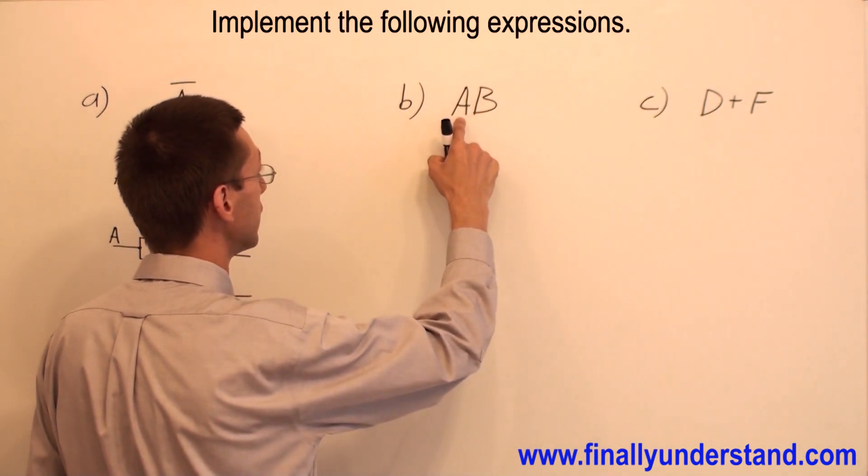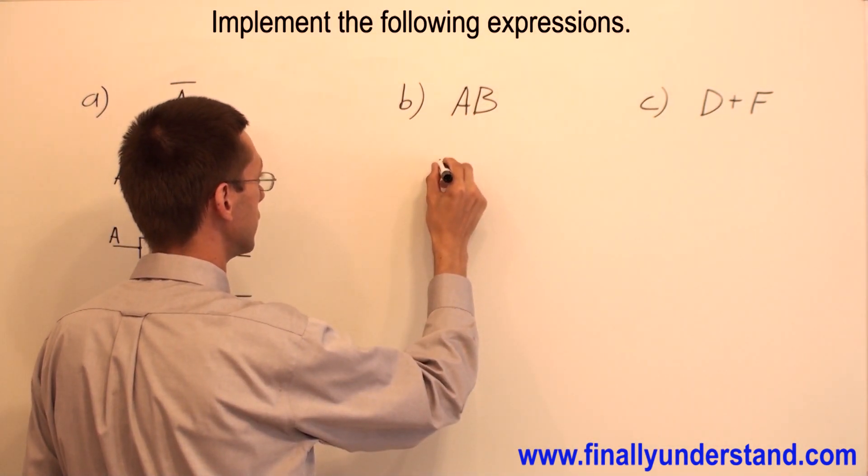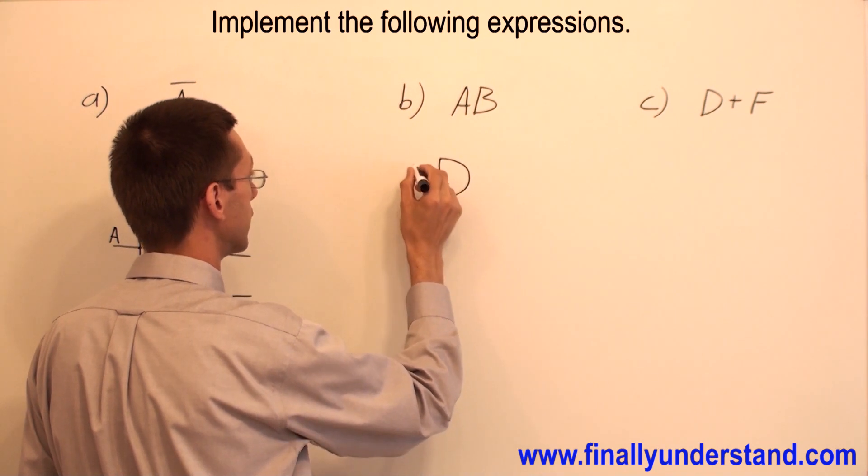Now we have A and B. This is simply AND gate.